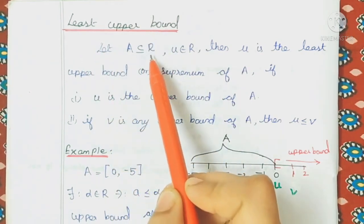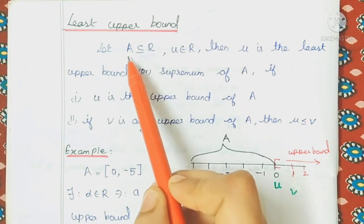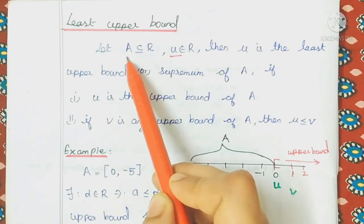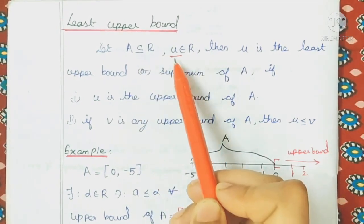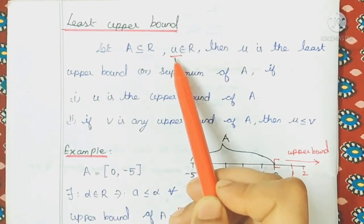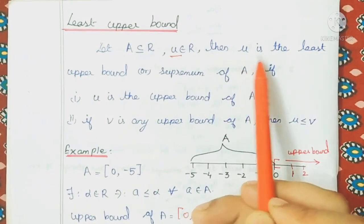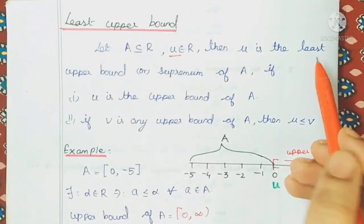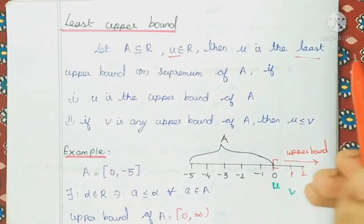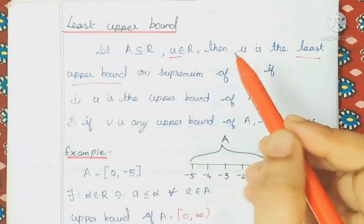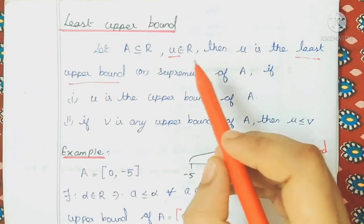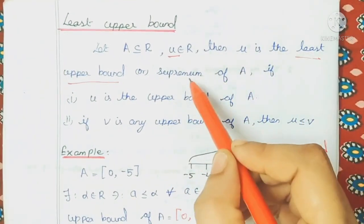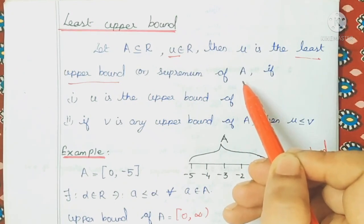Let A be a subset of R. Let U be the least upper bound — otherwise, we can say supremum. Let A be the set.